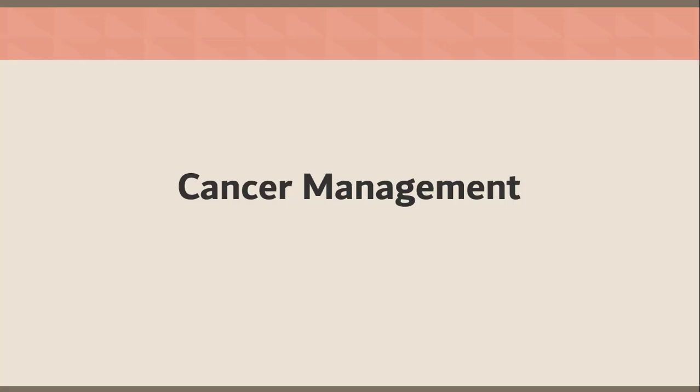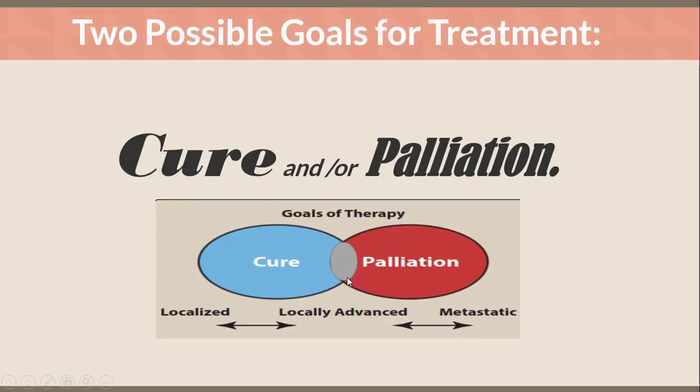In cancer management, there are two possible goals for the treatment of cancer: cure and/or palliation. When the tumor is localized, the physician will choose the cure pathway. If the cancer is metastatic, palliation is the best-fitting solution. For locally advanced or stage three cancer, it is in between cure and palliation, and it depends on the healthcare team's decision and treatment plan.